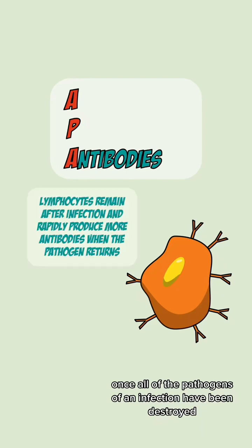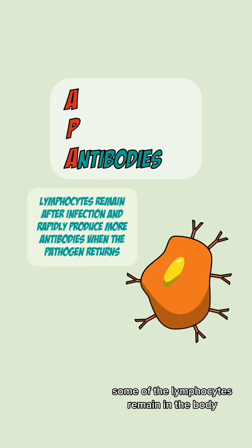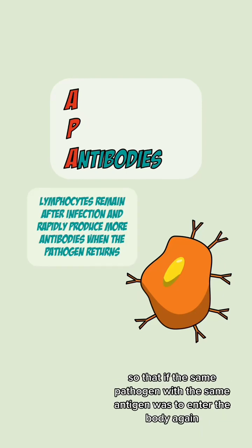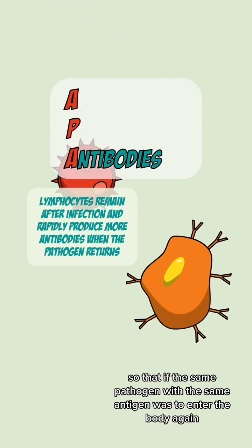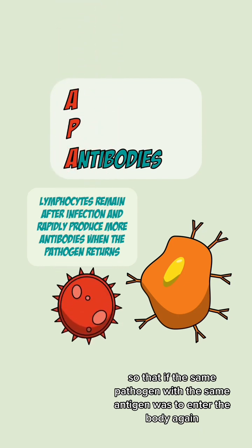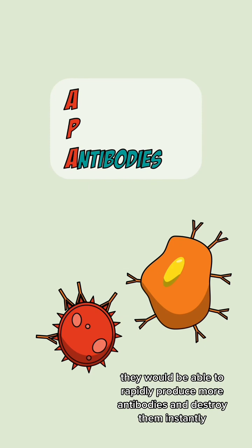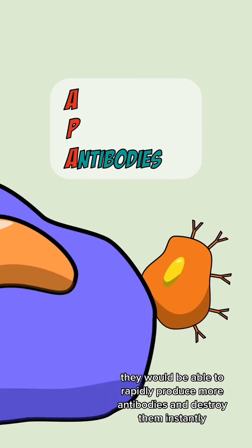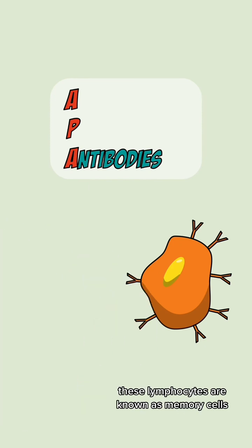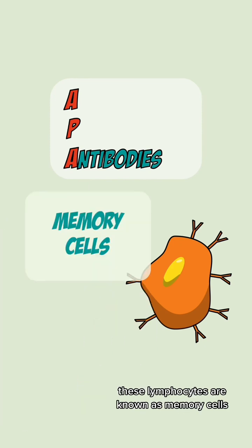Once all of the pathogens of an infection have been destroyed, some of the lymphocytes remain in the body so that if the same pathogen with the same antigen were to enter the body again, they would be able to rapidly produce more antibodies and destroy them instantly. These lymphocytes are known as memory cells.